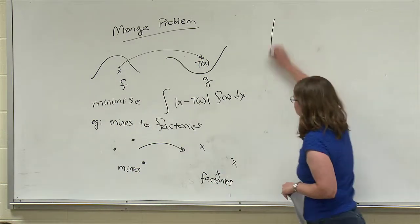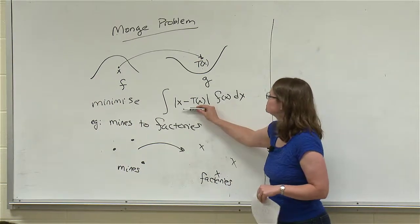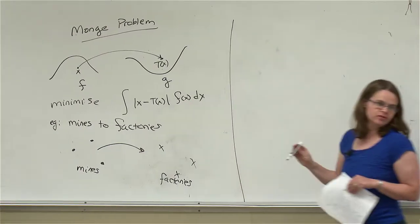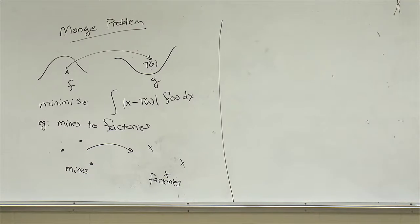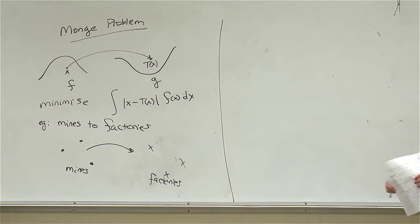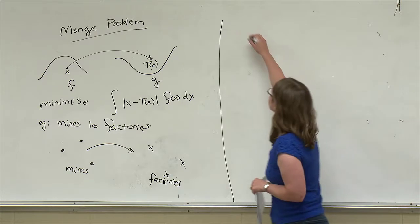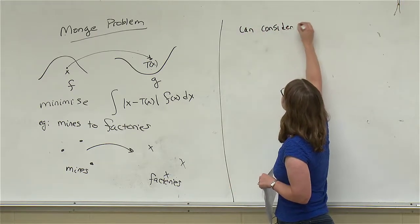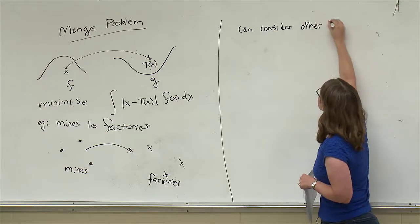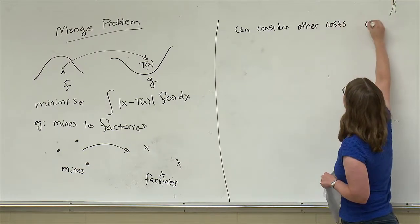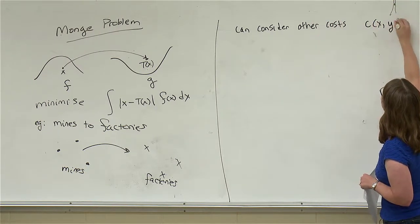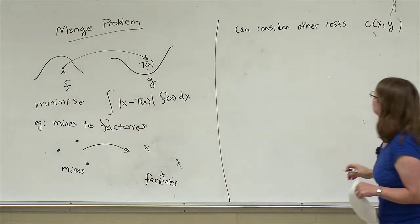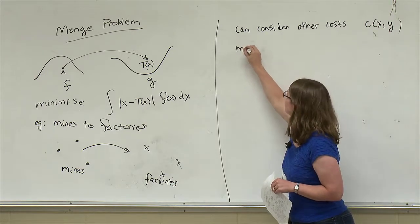Monge looked at the cost being the distance a unit of mass is transported, but you don't have to do that. In most applications, you actually do look at other costs. So we can also consider other costs — some cost function that says how much does it cost to move a unit of mass from x to y — and then you're trying to minimize the transport cost.